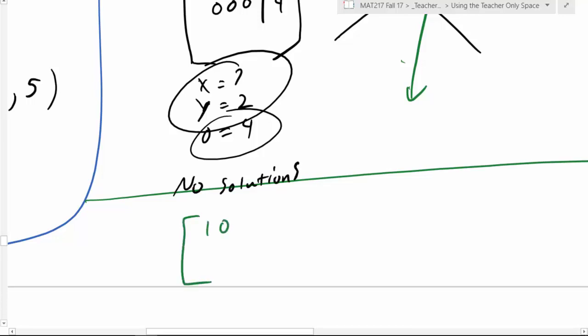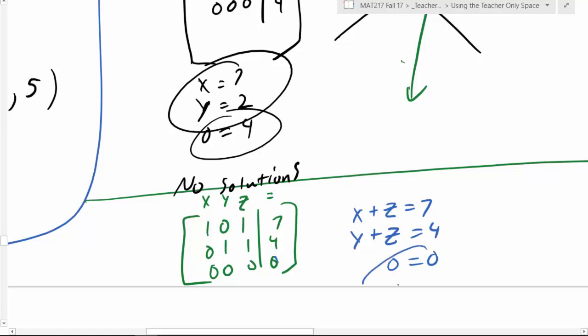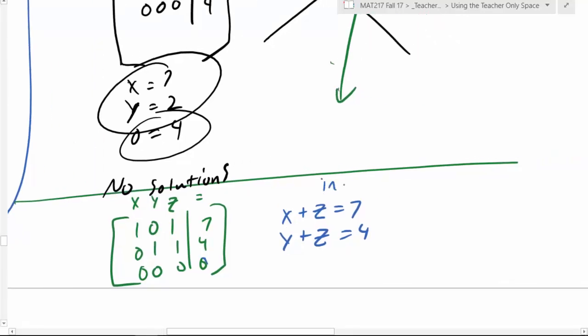One more I'm going to throw at you here. Sometimes you get something that looks like this, and let's assume this is x, y, z equals. How do you interpret this? The first equation is x plus z equals 7. The second equation is y plus z equals 4. And the bottom row is 0 equals 0. So what do we know? It's true, because we have 0 equals 0. This is saying to us there is not one solution, but we have infinitely many solutions.